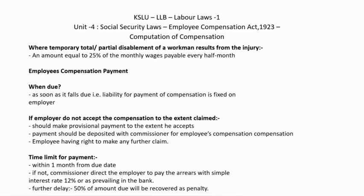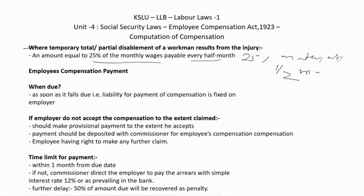For temporary partial disablement, an amount equal to 25% of the monthly wages is payable every half month. So 25% of monthly wages will be paid on a half-monthly basis.